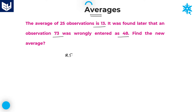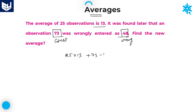The sum of 25 observations is 25 into 13. Now, don't multiply this number, because there is a small change. It was found later that an observation 73 was wrongly entered as 48. The correct value is 73, but it was wrongly entered as 48. For the correct value, we use a positive sign; for the wrong value, we use a negative sign.